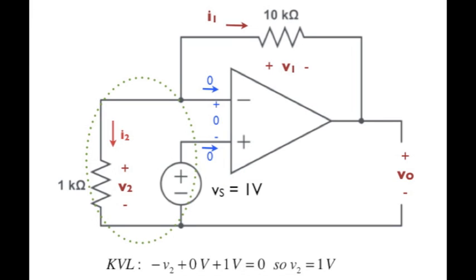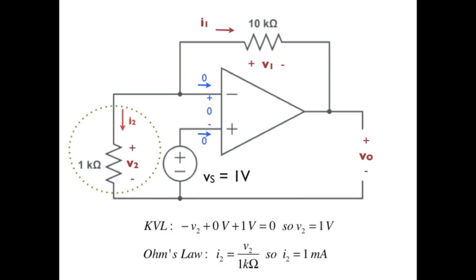We do so, and now let's use other element constraints, plus Kirchhoff's current law and Kirchhoff's voltage law to find the output voltage. Writing KVL around the loop shown, for example, we have minus V sub 2 plus 0 plus 1 volt equal to 0, so the voltage drop across the 1K resistor is 1 volt. By Ohm's law, then, the current through that resistor, I sub 2, must be equal to 1 volt over 1 kilo-ohm, or 1 milliamp.